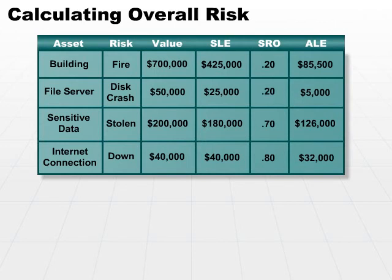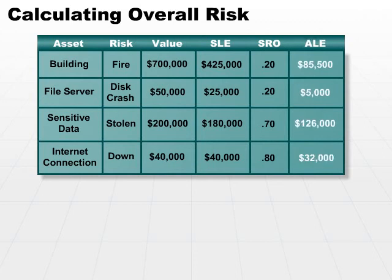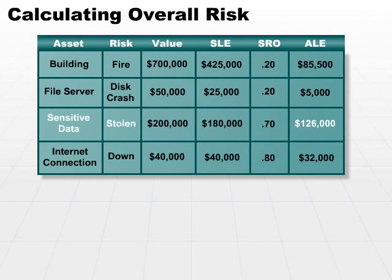I won't read the rest of the table to you, but you get the idea. What we do with this is look at the ALE — annualized loss expectancy — to see which one looks like the worst loss we can incur. Once you have all the analysis and calculations done, that part's simple. Stolen sensitive data is going to hit us to the tune of $126,000. That may be the first place we go when looking for the right controls. I say maybe because we might find out that in order to control the sensitive data in question, maybe it costs us $175,000 — that's not a good control to implement. But this is the first place we look: which one is going to hurt us the most financially?